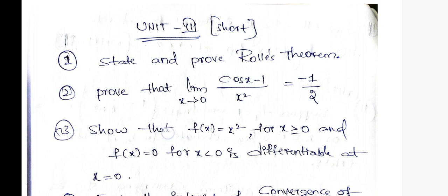Third one: show that f of x equals x square for x greater than or equals to 0 and f of x equals 0 for x less than 0 is differentiable at x equals 0.